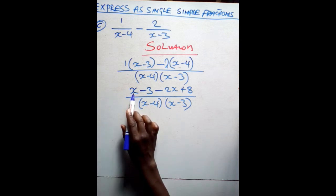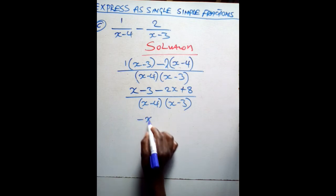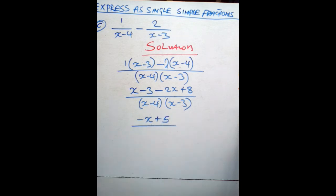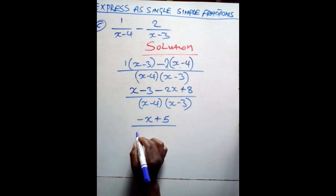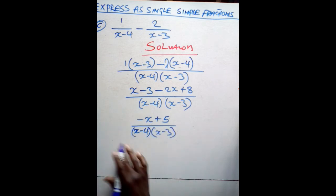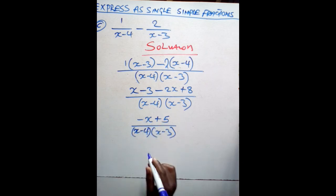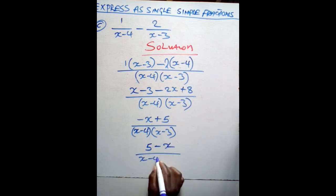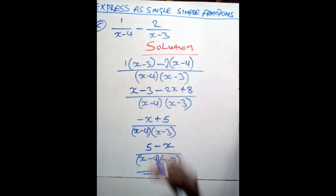From there, consider the like terms. x minus 2x will give you negative x. Negative 3 plus 8 will give you plus 5. So the next step gives us (negative x plus 5) over (x minus 4)(x minus 3). Is there anything that is a common factor? Nothing. But it is better that we start with a positive, so we write it as (5 minus x) over (x minus 4)(x minus 3). This is the simplified form of the question.